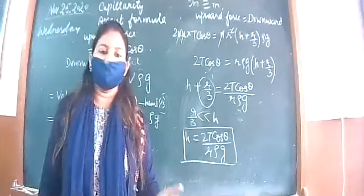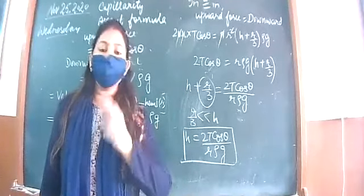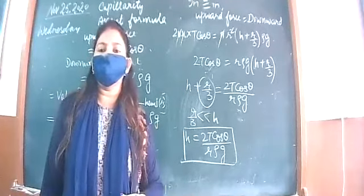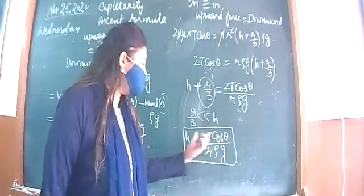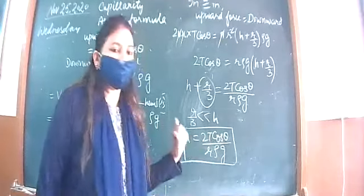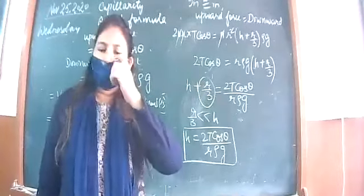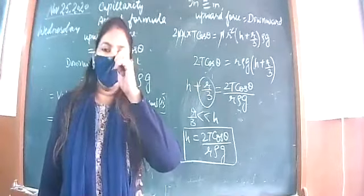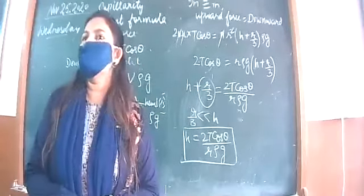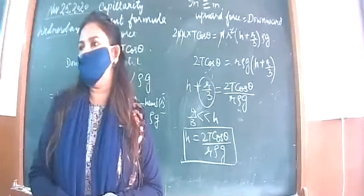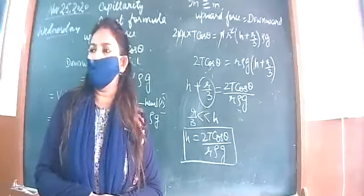For example, mercury has an obtuse angle of contact with glass — about 138 to 140 degrees. So cos theta is negative, height is negative, meaning such liquids fall in the capillary tube. That is why mercury falls in a glass capillary tube instead of rising.